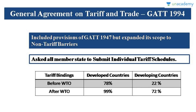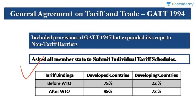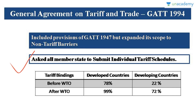Annex 1 contains three agreements: the General Agreement on Tariffs and Trade — called GATT 1994 — the General Agreement on Trade in Services, and Trade-Related Intellectual Property Rights. We are going to begin with GATT 1994. Pay attention to the name — this is GATT 1994, which is different from GATT 1947. The scope of GATT 1994 is far more wide than GATT 1947 — it includes non-tariff barriers along with tariff barriers.